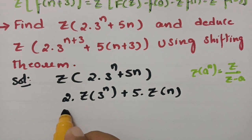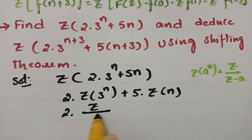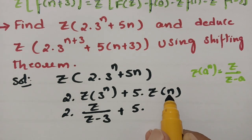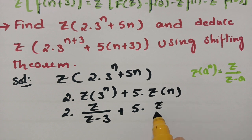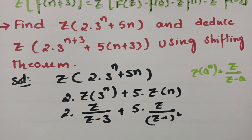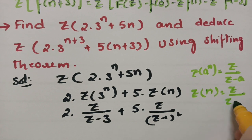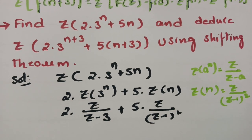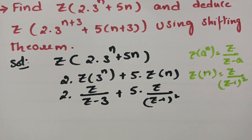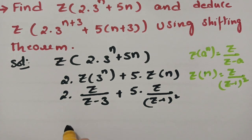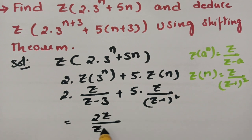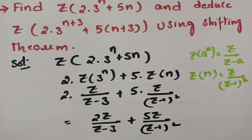Substituting: 2 into z/(z−3), and for Z transform of n we use z/(z−1)^2. So we have Z transform of n equals z/(z−1)^2. These are standard Z transform properties. So this value becomes 2z/(z−3) plus 5z/(z−1)^2.